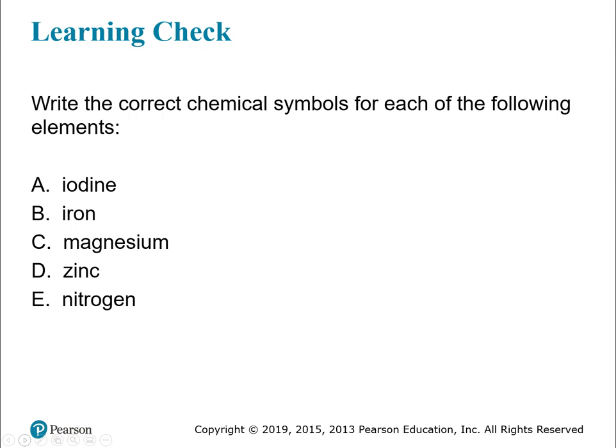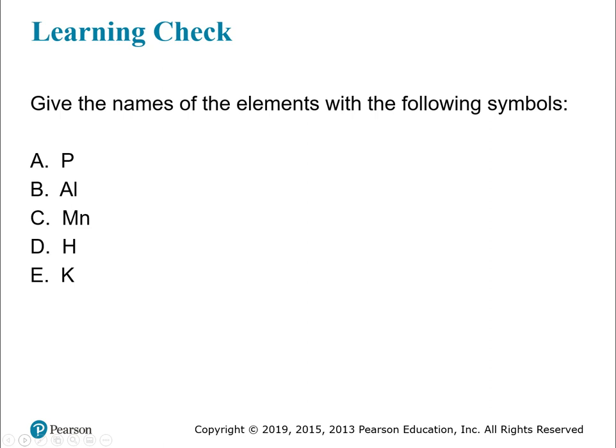I'm not going to go through these learning checks for you because you should be able to do them with a periodic table. If you've taken chemistry before, you should be able to look up the element name — like iodine — and find the symbol for it. Likewise, you should be able to look up the symbol and know the element name. Sit down with your periodic table and make sure you can find the different elements. If you can't, don't be ashamed — let me know.